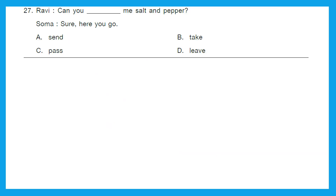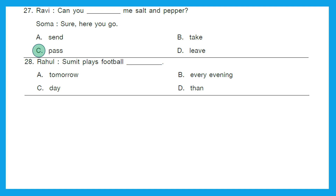Question 27 — Ravi: 'Can you dash me salt and pepper?' Soma: 'Sure, here you go.' The right answer is 'pass,' option C: 'Can you pass me salt and pepper?' Question 28 — Rahul: 'Soma plays football dash.' Options are: tomorrow, every evening, day, or then. It is a simple present tense showing a regular activity, so the right answer is option B, every evening: 'Soma plays football every evening.'